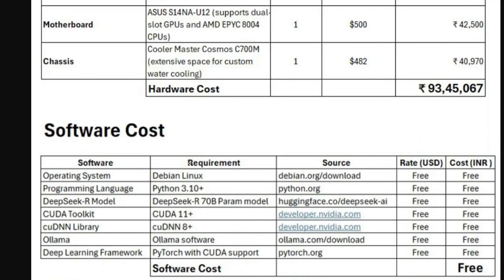Talking about software-related costs, there is nothing you need to purchase. The operating system Linux is free. Python 3.10 is required. The DeepSeek R1 model weights are open-sourced, so you can load the model for free. You would need the CUDA Toolkit from developer.nvidia.com and cuDNN 8+, both open-sourced. You would also need Ollama to run the model locally — also free — and PyTorch with CUDA support as the deep learning framework.